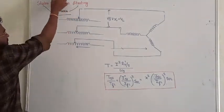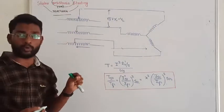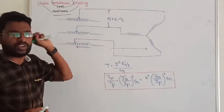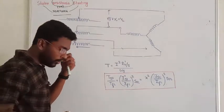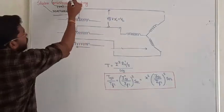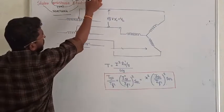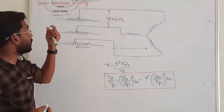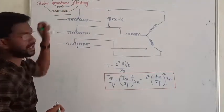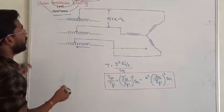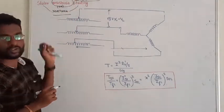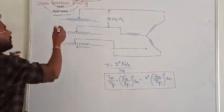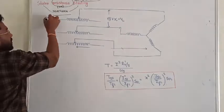By using resistance, we can control voltage and also control the current. But the problem with resistance is we have I²R loss — copper loss. To avoid this copper loss, we go with reactance. The Stator Reactance starting method can reduce the losses. However, compared to resistance, the reactance method is costlier.